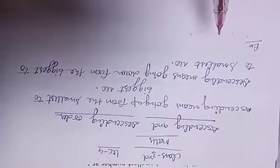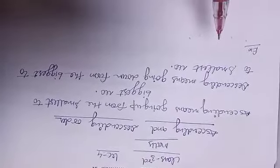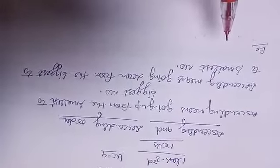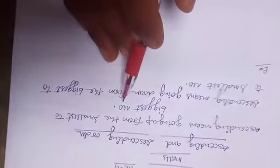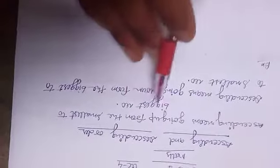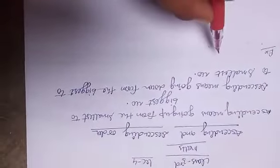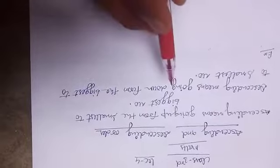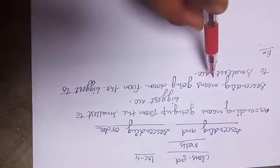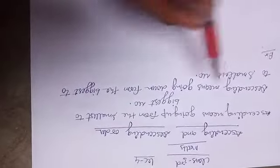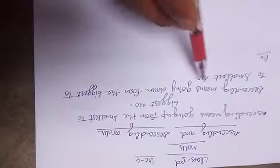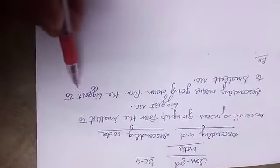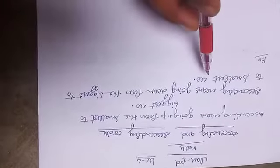Hello everyone, this is the fourth lecture of Maths in which we will discuss ascending and descending order. Ascending means going up from the smallest to the biggest number — smallest number to biggest number. Descending means just the opposite of ascending — going down from the biggest to the smallest number.